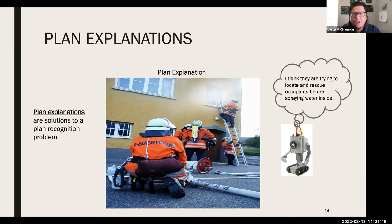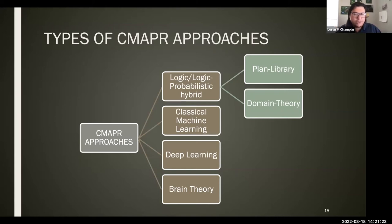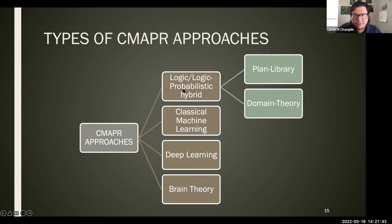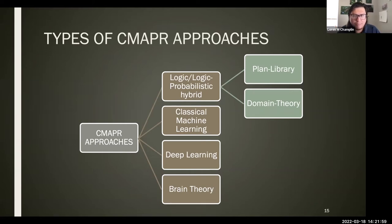Now I'll move to the different types of approaches for cooperative multi-agent plan recognition. There are four main types: logic or logic-probabilistic hybrid approaches, classical machine learning approaches, deep learning approaches, and brain theory approaches. Brain theory approaches are inspired by neuroscience and biology. The logic or logic-probabilistic hybrid approaches can be split into two subtypes: plan library-based approaches and domain theory-based approaches.